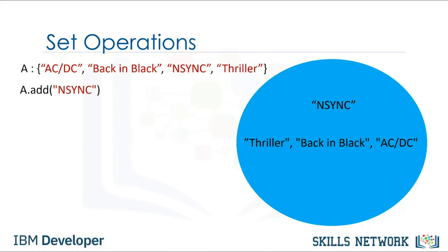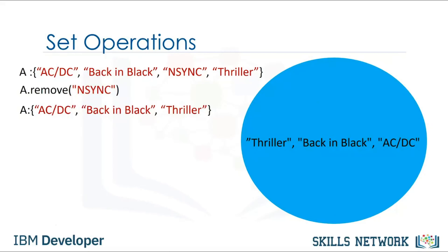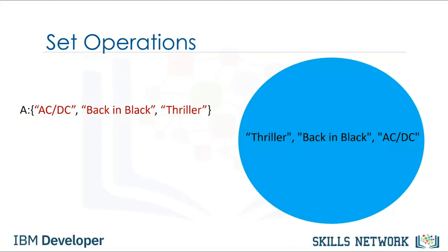If we add the same item twice, nothing will happen as there can be no duplicates in a set. We can also remove an item from a set using the remove method — we put the set name followed by a dot, then the remove method. The argument is the element we would like to remove, in this case in sync. After the remove method is applied, set A does not contain in sync. You can use this method for any item in the set.